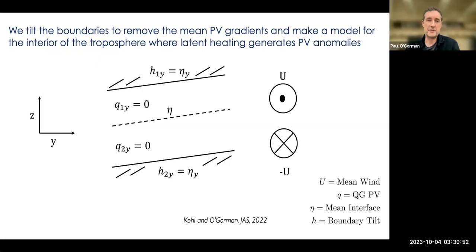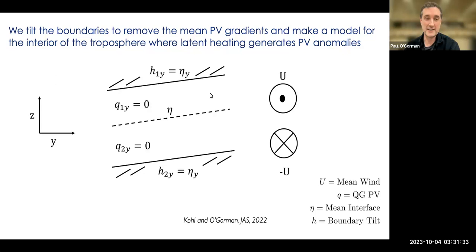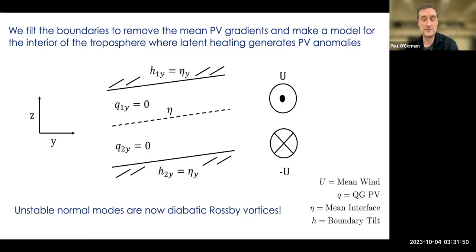So how do we make this a model for diabatic Rossby vortices? We take the simple approach of tilting the boundaries. It's the same kind of model — it has a tilt in the interface corresponding to a temperature gradient — but now we have the exact same tilt in the upper boundary and in the lower boundary. Having worked on this for a while, we actually discovered in retrospect that Francis Bretherton had suggested this idea as a way to separate the issue of PV gradients from temperature gradients. What we want is to look at the simplest case where the PV gradient is actually zero — the thickness of the layers in the basic state is now constant, so there's no PV gradient in the upper or lower layer. When we do this, we find that the unstable modes are now diabatic Rossby vortices, and we can study them.